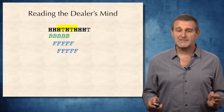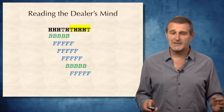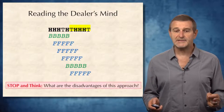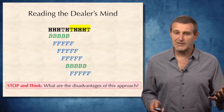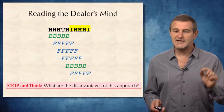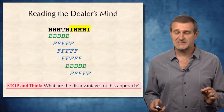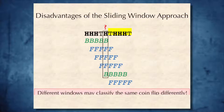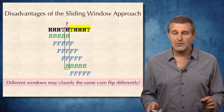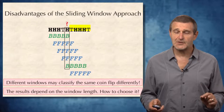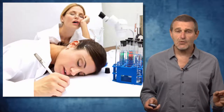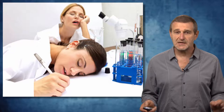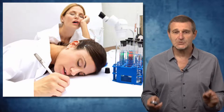To continue reading the dealer's mind, we go through the whole sequence, computing at each window which coin is more likely, and classify all windows as more likely biased or fair. However, there are disadvantages to this sliding window approach: different windows may classify the same flip differently, and the choice of window length obviously affects our conclusions. And while this is an interesting introduction to coin flipping, what does it have to do with biology?